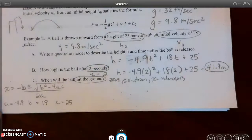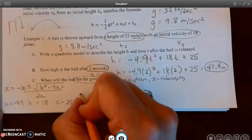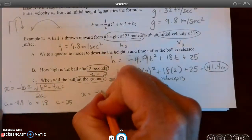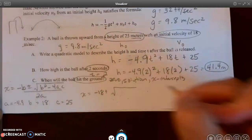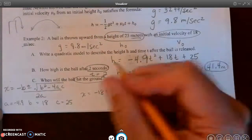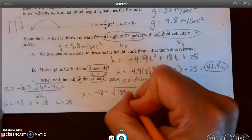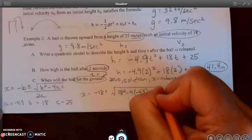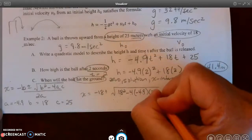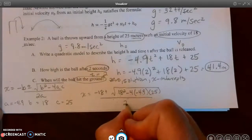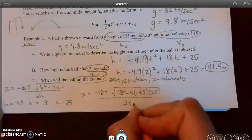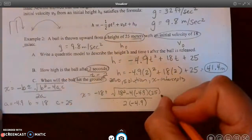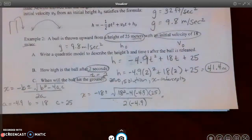So I'm just going to simply substitute into my quadratic formula. So x equals the opposite, I'm sorry, the opposite of b, so negative 18 plus or minus the square root of 18 squared minus 4 times negative 4.9 times c, which is 25, all over 2 times my a value, which is negative 4.9. So I'm going to go ahead and I'm going to use my calculator.